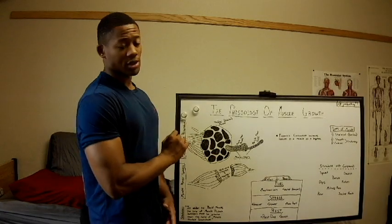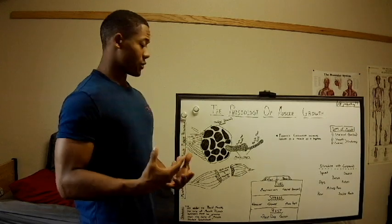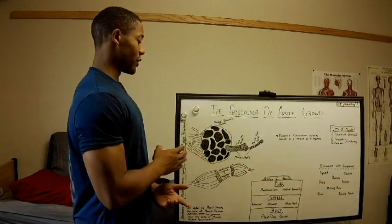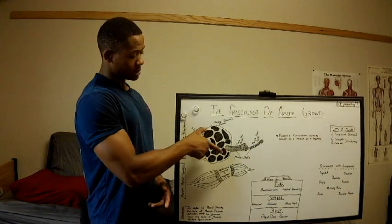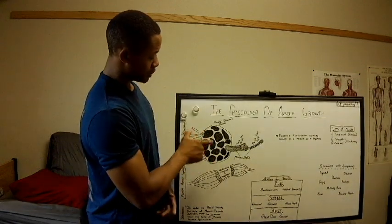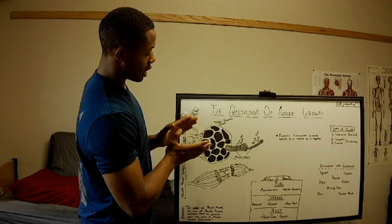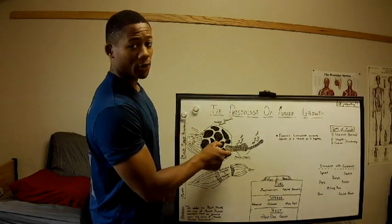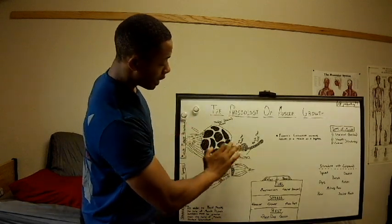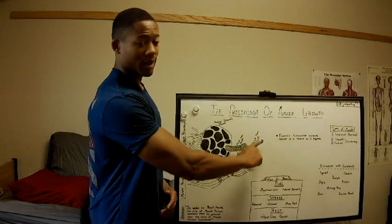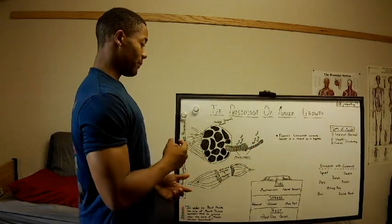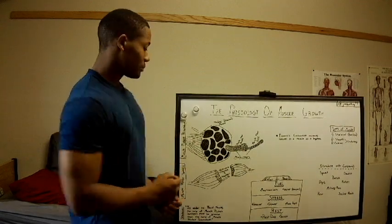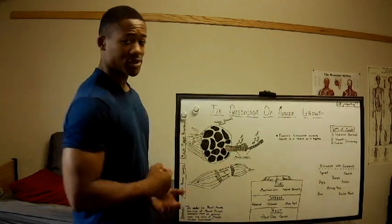Starting with the structure of skeletal muscle: skeletal muscle is striated and cylindrical. Within each muscle you have tiny muscle fiber bundles, and within those bundles you have muscle fibers, which are cells. In order for muscle protein breakdown to occur, you're going to need to cause micro tears.